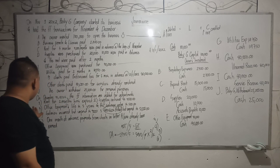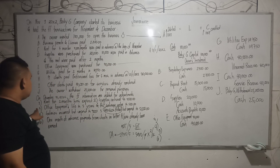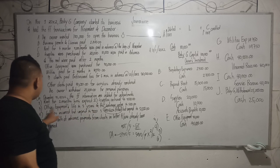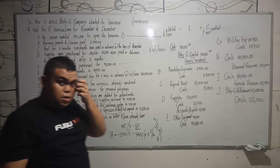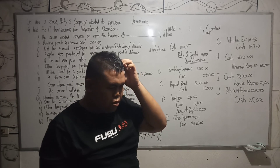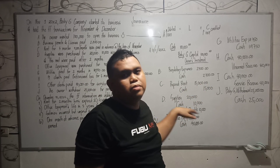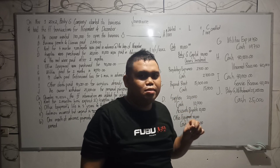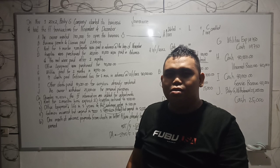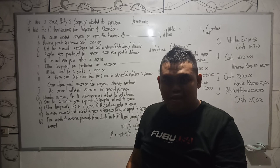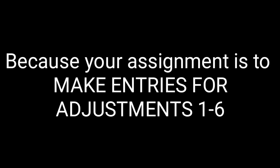I want you to make entries for transactions 1, 2, 3, 4, 5, and 6. I will have that prepared but I'm not going to upload it immediately. So I'm going to cut the video here.